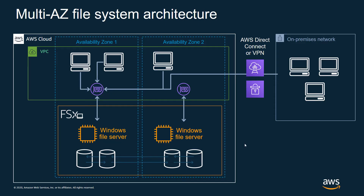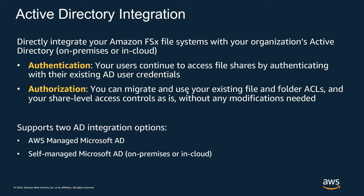If you have on-premises servers, systems, or users and connectivity between your on-premises environment and AWS — either via Direct Connect or VPN — those resources can also access the FSx file system across that connectivity. So Amazon FSx for Windows File Server can provide file server services not only to instances running in AWS, but also to your users and computers on-premises. In terms of Active Directory integration, Active Directory can be used for authentication so you can use your existing user credentials. It can also be used for authorization using the same NTFS access control lists, ACLs, and share-level controls as an on-premises Windows file server.